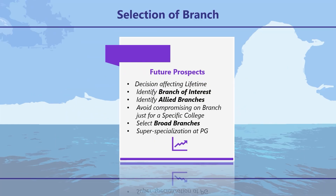Now, identify the branch which is of your interest, such as computer, electrical, mechanical, or civil. Choose that branch. Do remember, the computer branch also has allied branches like information technology, electronics and computer science, and electronics and telecommunication.